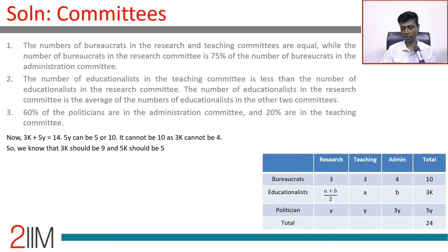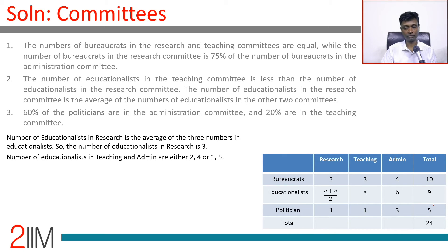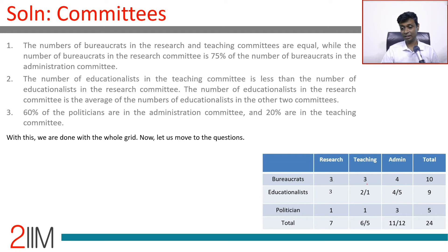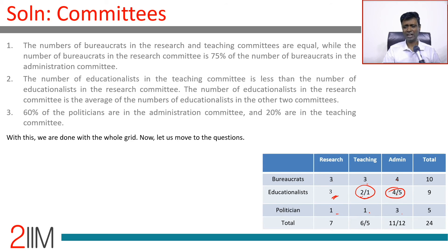The bureaucrat total is 10: research=3, teaching=3, admin=4. The politician total is 5: research=1, teaching=1, admin=3. The educationalist total is 9 and since research educationalists = (a+b)/2, the middle term is 3 — so research educationalists = 3. Since a < 3, teaching educationalists (a) could be 1 or 2; since b > 3, admin educationalists (b) could be 4 or 5. These two could be 2 and 4, or 1 and 5 — they add up to 6 but we do not have more clarity there. Everything else is filled in completely. The big temptation here is to draw a Venn diagram, but the statement that there is no overlap tells us we should go for the grid instead.